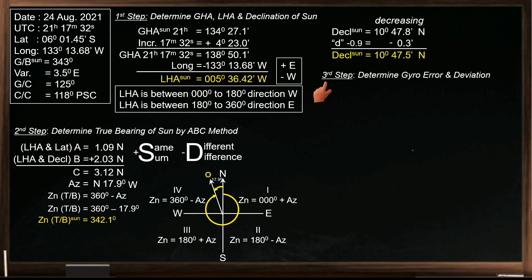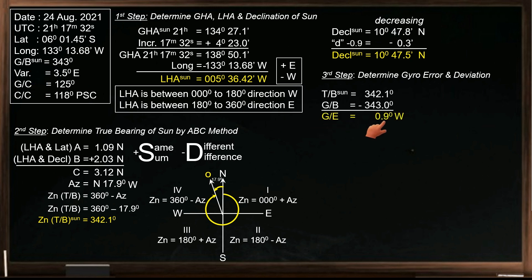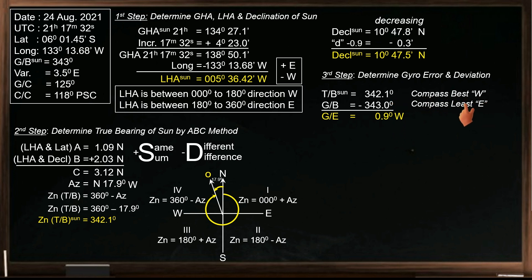For the third and last step, we will now determine the gyro error and the deviation for the ship's heading. The difference between true bearing and gyro bearing is our gyro error, which is 0.9 degrees — just subtract lesser from greater. The error is less than 1 degree, which is the typical common error of a gyro compass. To determine the direction, we use the rhyming rule: if the compass is best, the error is west; if the compass is least, the error is east. Best refers to the greater value, least to the lesser. Here the compass (gyro bearing) is greater, so the direction of gyro error is west.